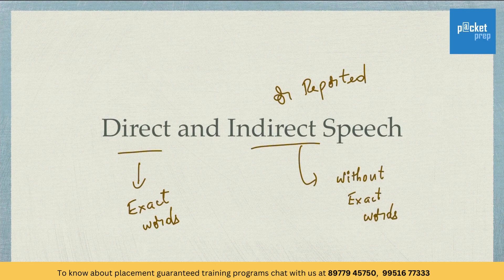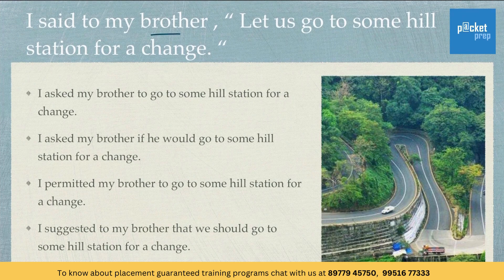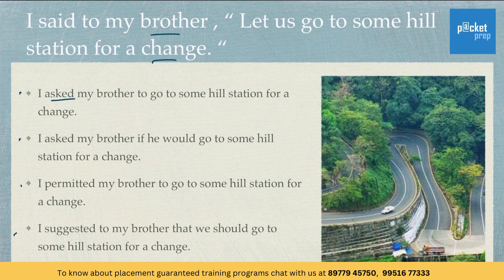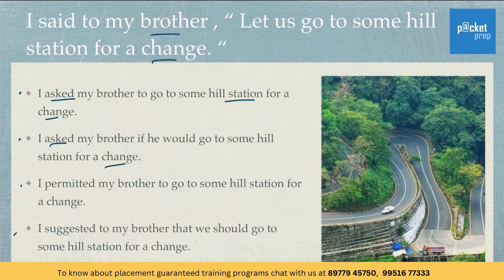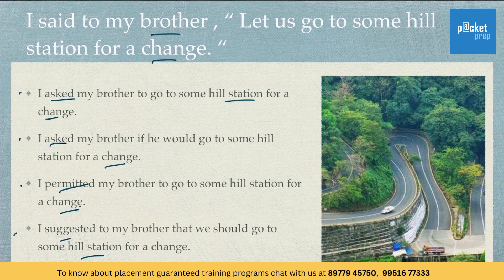Let us solve a few types of questions asked in this topic. Here is the first one: 'I said to my brother, let us go to some hill station for a change.' The options are: A) I asked my brother to go to some hill station for a change. B) I asked my brother if he would go to some hill station for a change. C) I permitted my brother to go to some hill station for a change. D) I suggested to my brother that we should go to some hill station for a change.